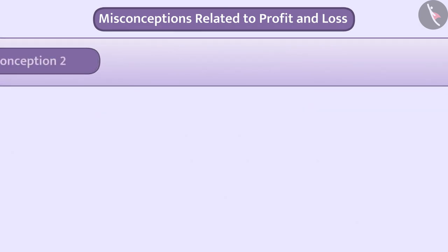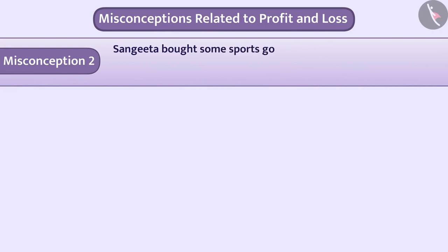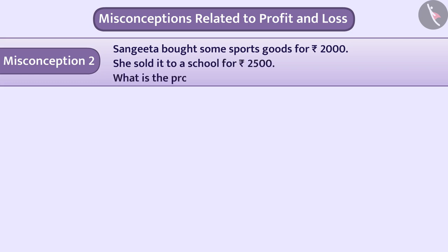Misconception 2: Sangeeta bought some sports goods for ₹2000 and sold them to a school for ₹2500. What is the profit percentage in this transaction?